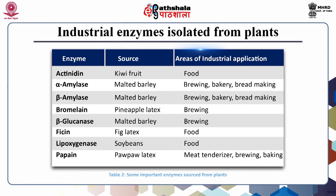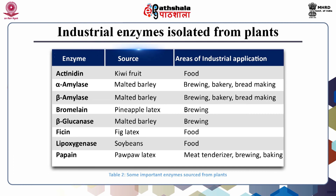Bromelain is an important enzyme extracted from the pineapple fruit, with applications in pharmaceutical, baking, and protein processing industries. Phycin is purified from the latex of the fig tree, Ficus globata or Ficus carica. All three — papain, bromelain, and phycin — are protein-hydrolyzing enzymes that exhibit broad specificity for protein hydrolysis over a wide pH range.